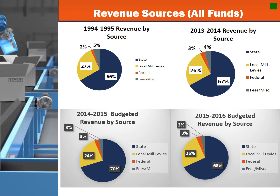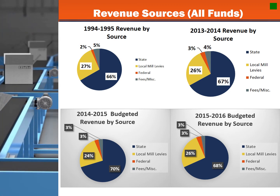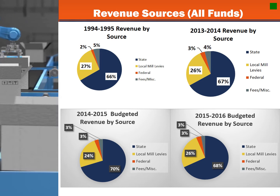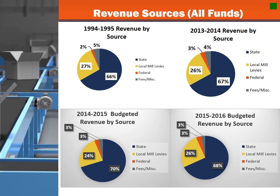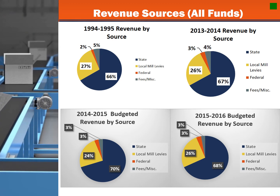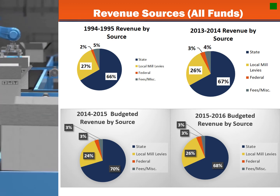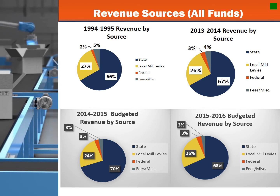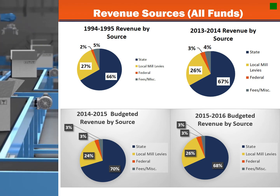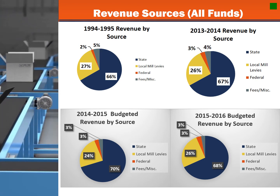People regularly ask us where does our money come from. So these are just a few graphics that display the percentages from various sources. Our 2016-2017 budget resembles the 2014-2015 budget. Therefore, it can be assumed around 70% of our funds come from the state and around 24% has come from local mill levies, with much less from federal sources, fees, and miscellaneous.